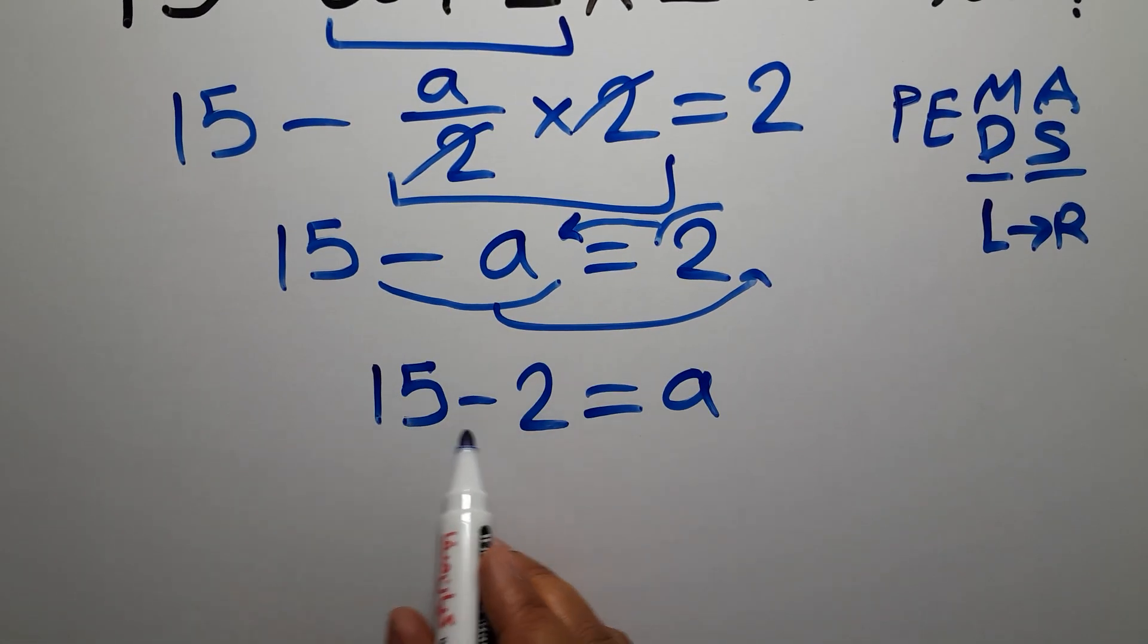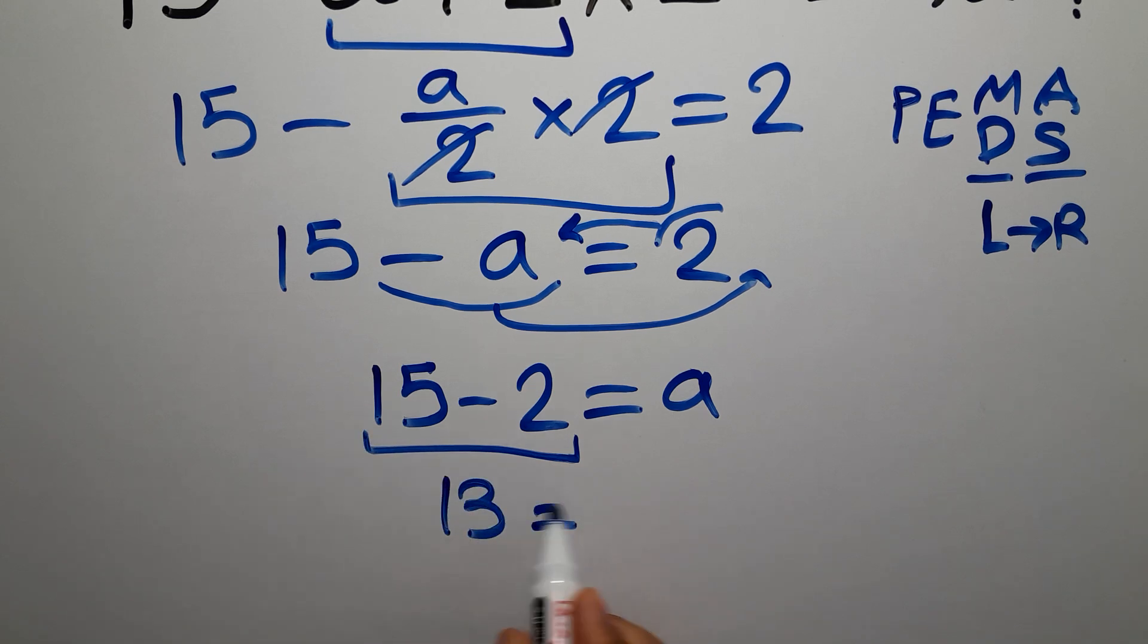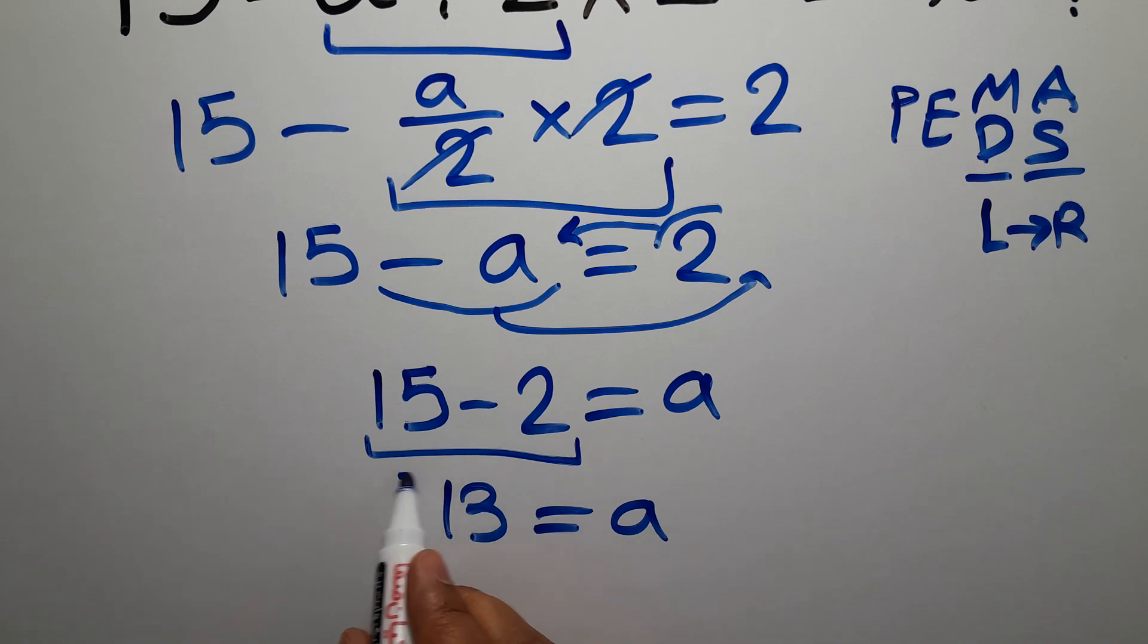So 15 minus 2 gives us 13. So 13 is equal to a, and this is our final answer to this problem. a is equal to 13.